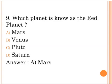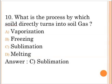Next question: Which planet is known as the red planet? A. Mars, B. Venus, C. Pluto, D. Saturn. The correct answer is option A, Mars.